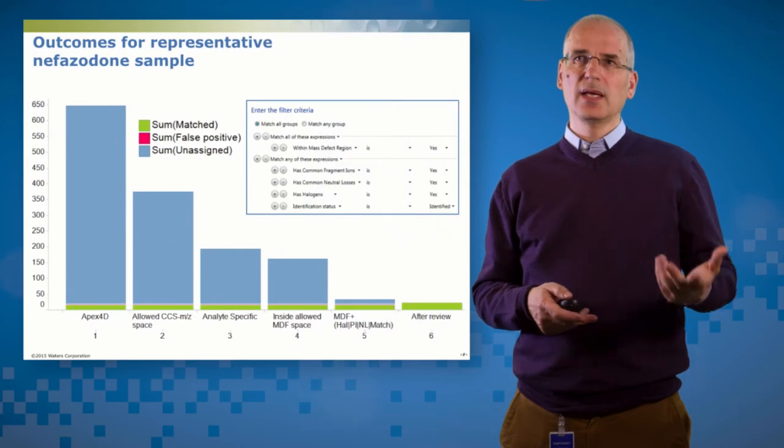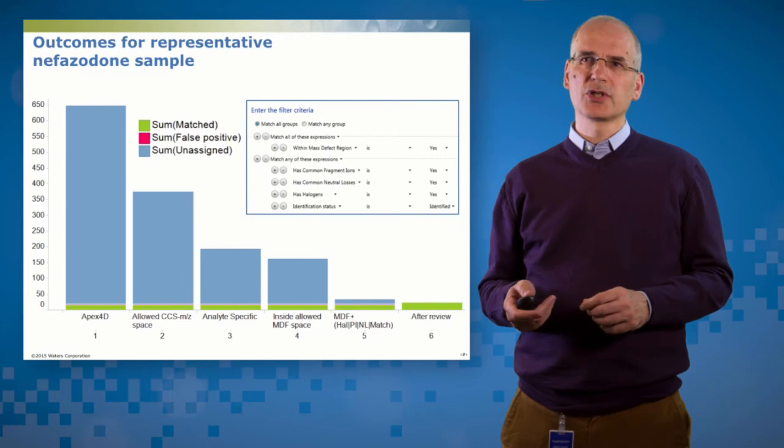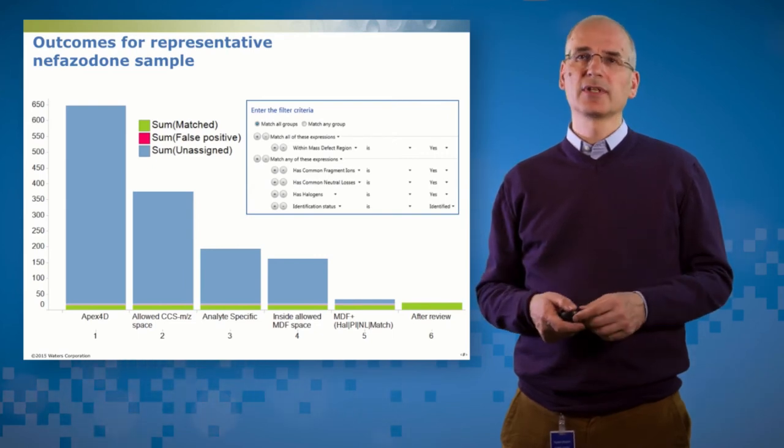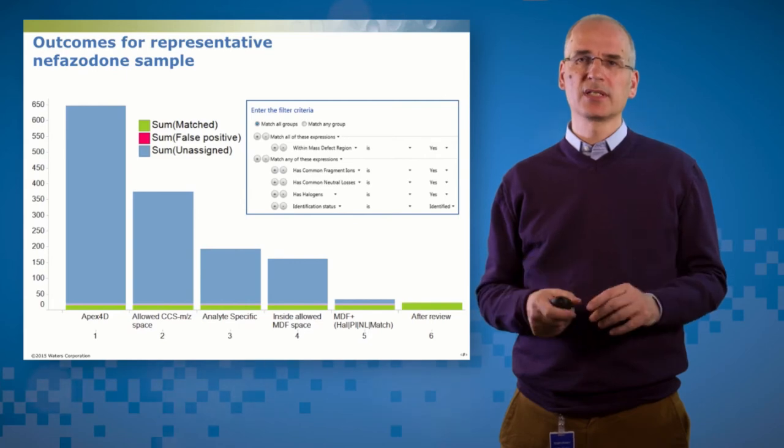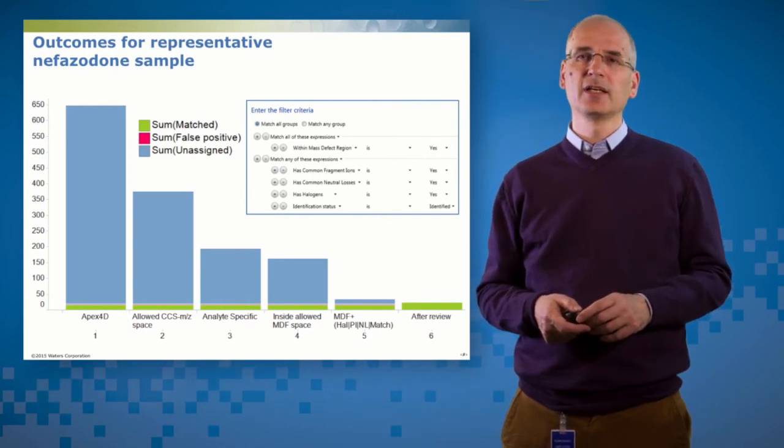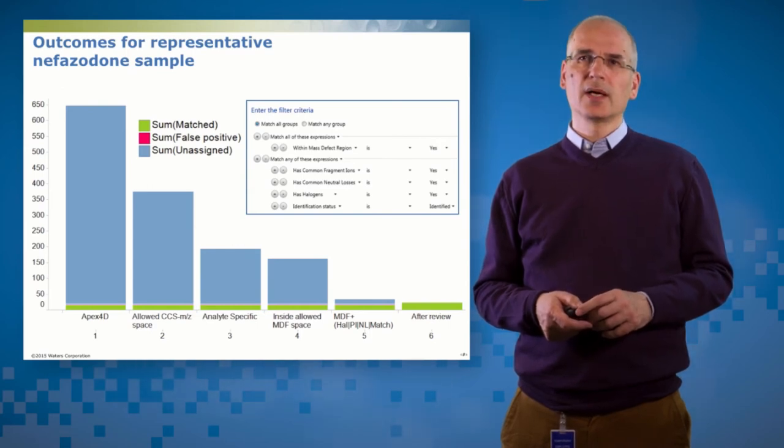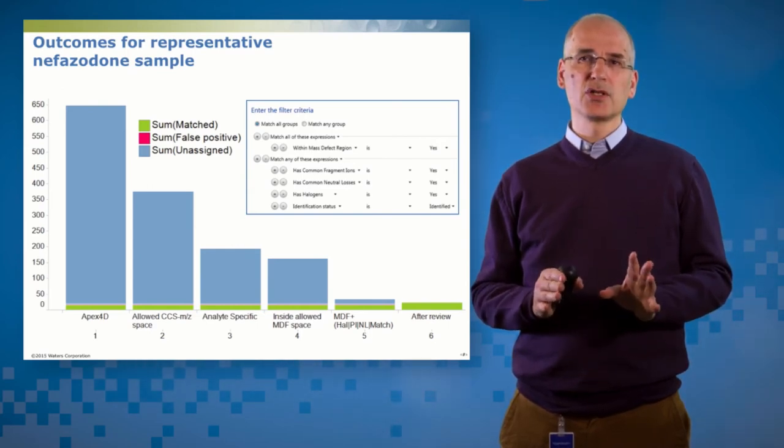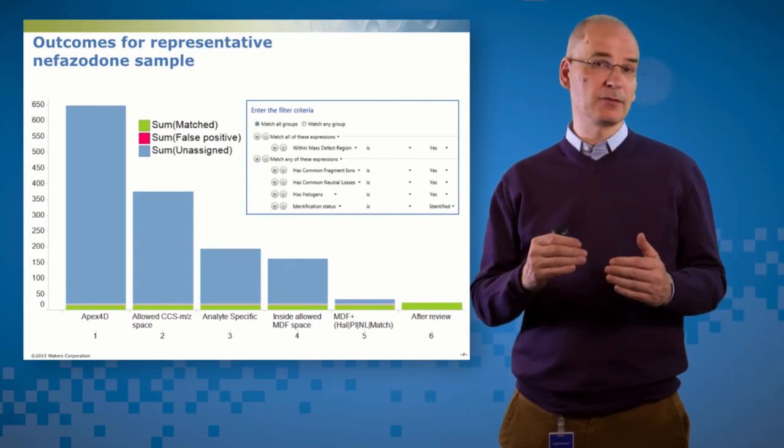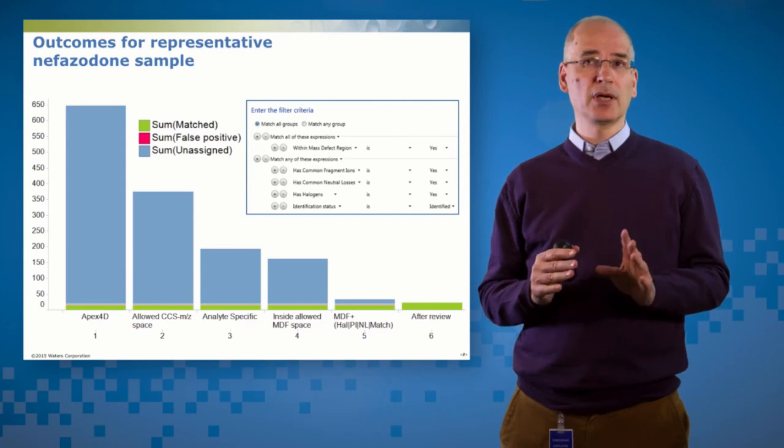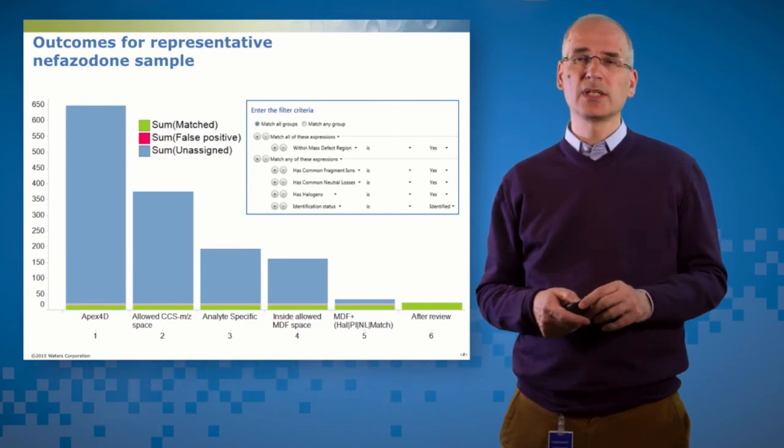So here's how that would bubble through into the analysis. On this plot, I'm showing an analysis of one of those samples. And on the left hand side is just all the components that are present in that sample. And there are around 650 individual components in that first sample. I can say, remove everything that's not in allowed mass to charge CCS space for small molecules. And that takes about 40% of those components are unlikely to be drugs or drug metabolites because they're not in the allowed space.